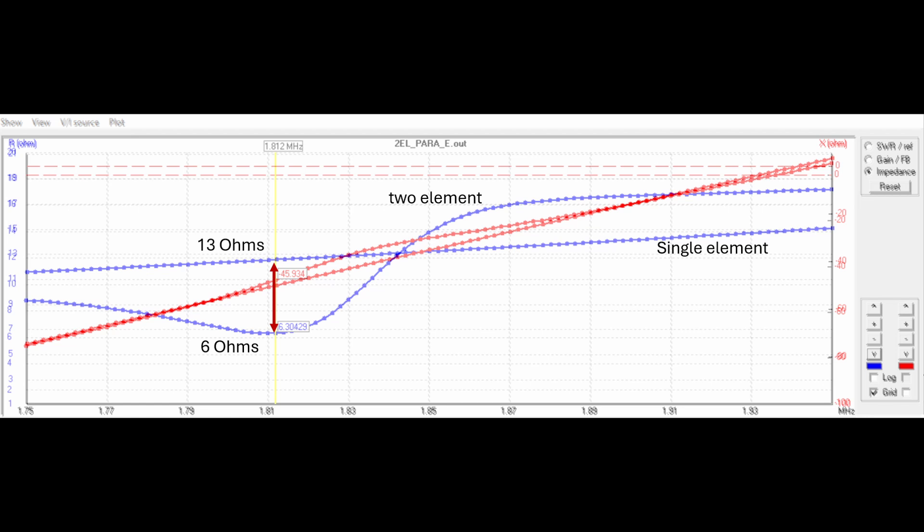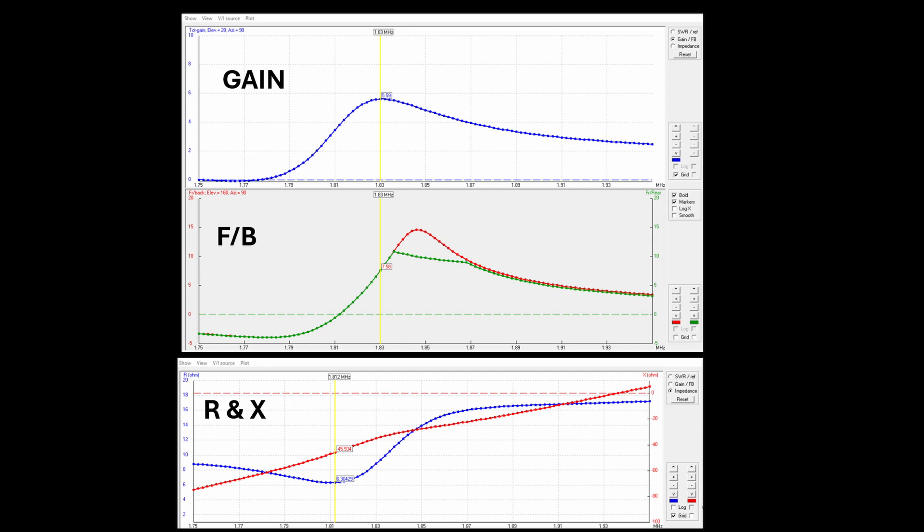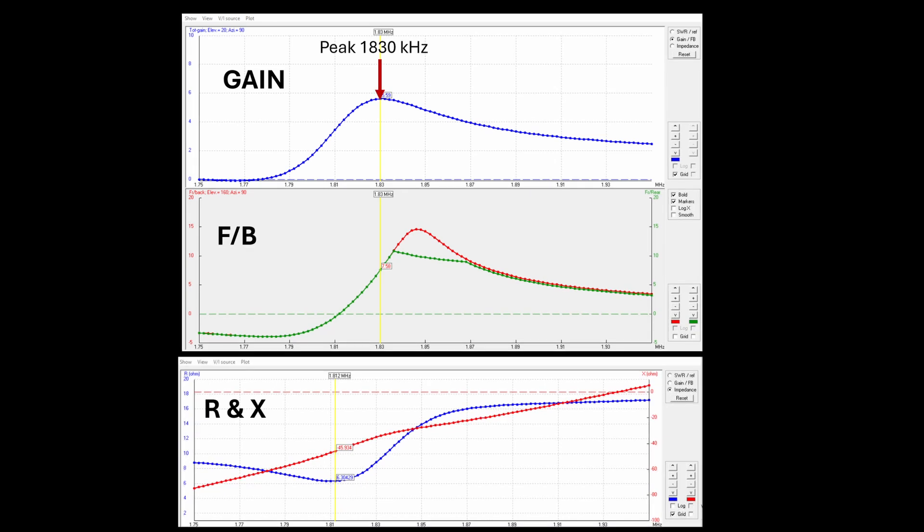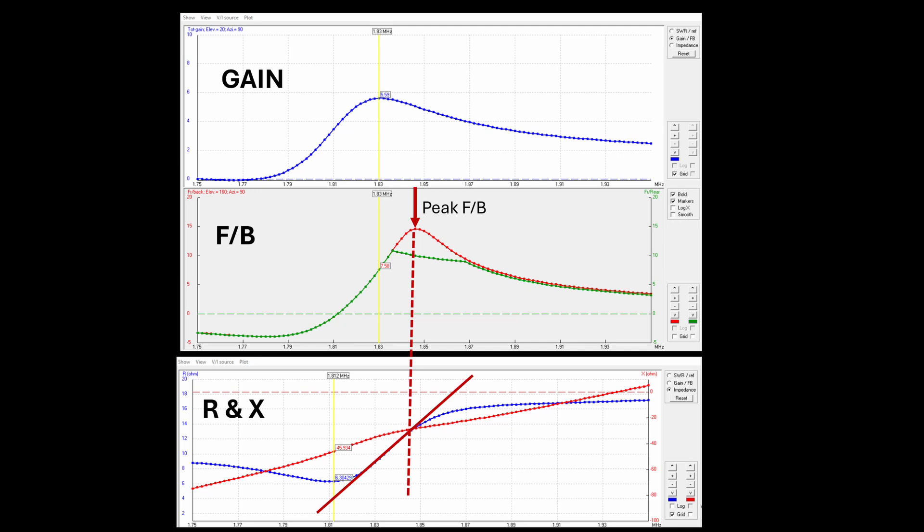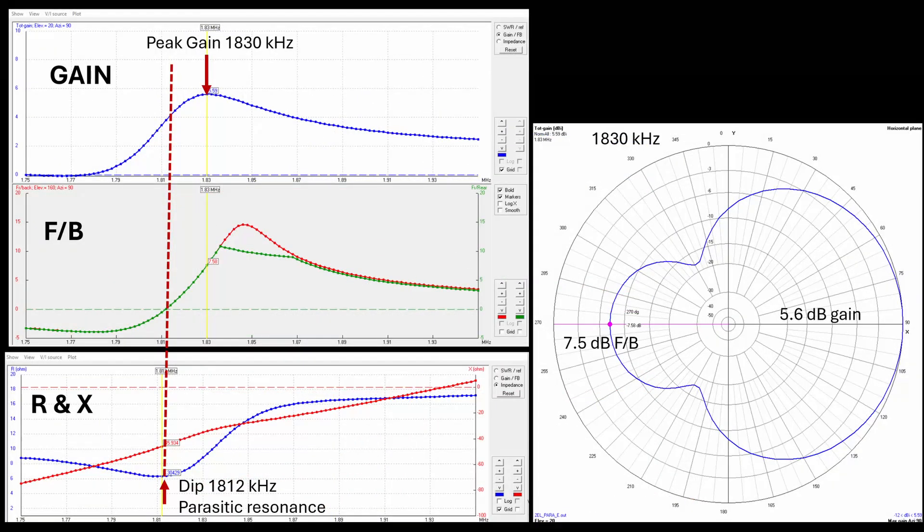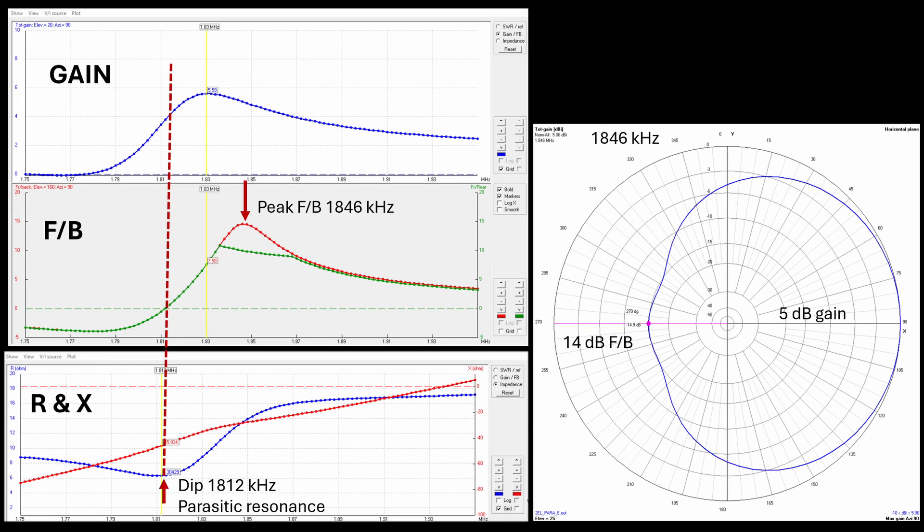Now look, here's the punchline. The same frequency sweep from 4NEC2 will also plot gain and front-to-back as shown here, with the impedance sweep that I just showed below it. Now notice that the peak gain at 1830 kilohertz is coincident with the approximate midpoint of this rising R curve, while the front-to-back peaks slightly higher in frequency. This is because in this model, with the parasitic resonant at 1812, it is acting like a reflector above that frequency. Now this is the key.